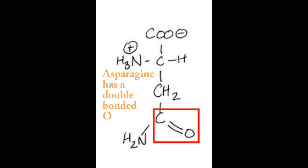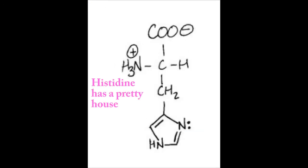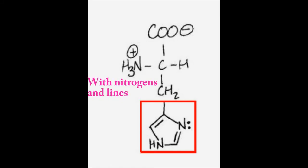Asparagine has a double bond O. Glutamine is a bit longer. Histidine has a pretty house with nitrogens and lines.